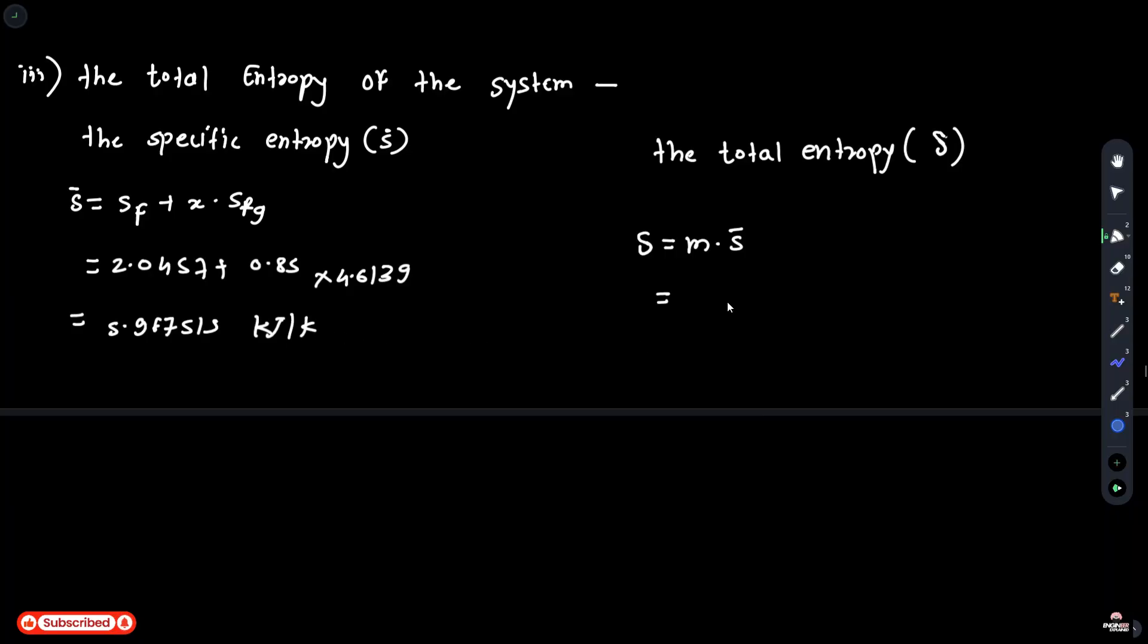The total entropy S is equal to mass 2 multiplied by specific entropy 5.967515. So total entropy is 11.935 kJ per K.